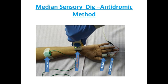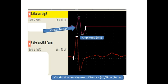The difference between the median mid-palm latency and ulnar mid-palm latency is less than 0.4 milliseconds. The second method is the antidromic technique. The stimulating electrodes are usually ring electrodes placed around the proximal and mid-palm of the second and third digit.